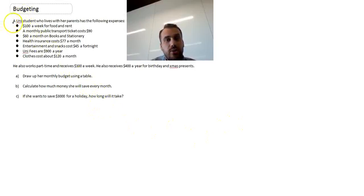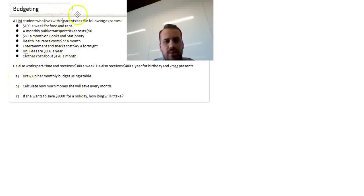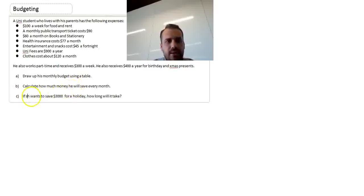So we're looking at budgeting. Now the basic idea is that you calculate all of your expenses over a given period of time, you calculate all of your income over a given period of time and you draw it up into a neat little table. Let's read this question. A uni student who lives with her parents has the following expenses: $100 a week for food and rent, a monthly public transport cost of $90, $60 a month on books and stationery, health insurance cost $77 a month, entertainment and snacks cost $45 a fortnight, uni fees are $900 a year, and clothes cost about $120 a month. This uni student also works part-time and receives $300 a week. He also receives $400 a year for birthday and Christmas presents. They accidentally changed gender, definitely a guy.